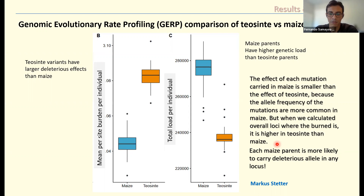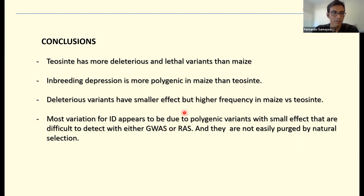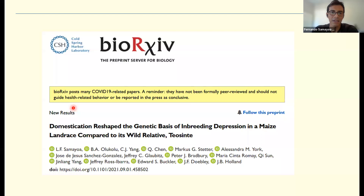My conclusions are as follows: teosinte has more deleterious and lethal variants than maize. Inbreeding depression is more polygenic in maize than teosinte. Deleterious variants have a smaller effect but higher frequency in maize versus teosinte. Most variants for inbreeding depression appear to be polygenic variants with small effects that are difficult to detect with either GWAS or the rare allele scan, and are also not easy to purge by natural selection. There are additional interesting analyses included in this publication, which is on bioRxiv and has been accepted for publication in PLOS Genetics and will be published in the coming weeks.